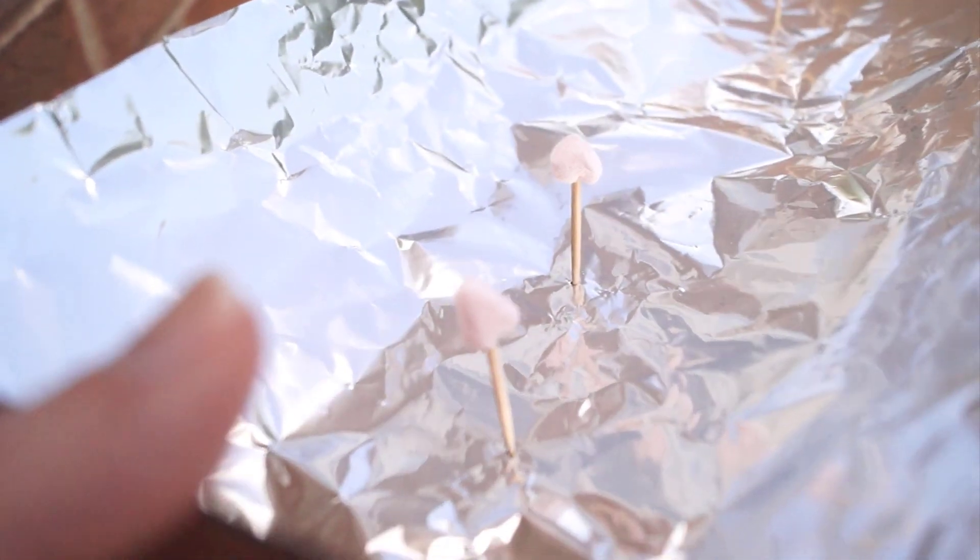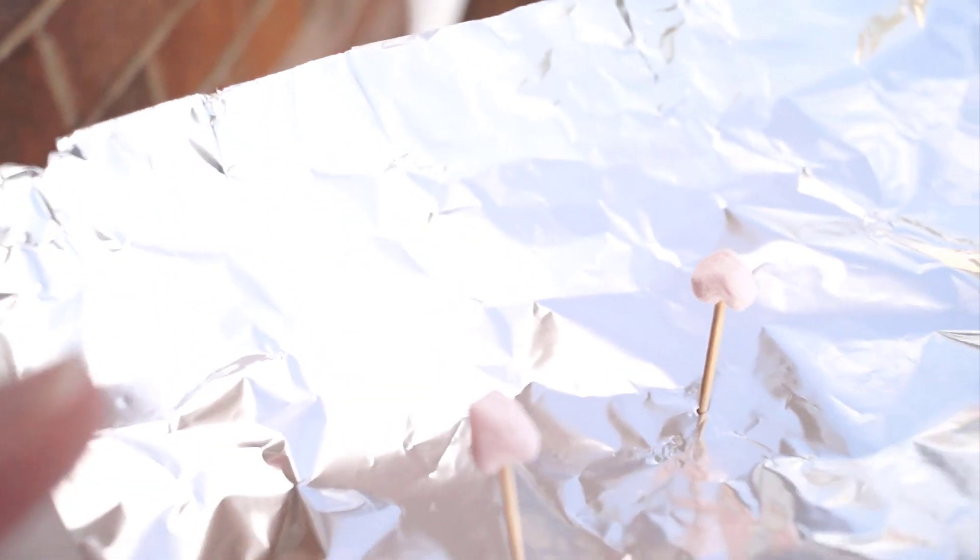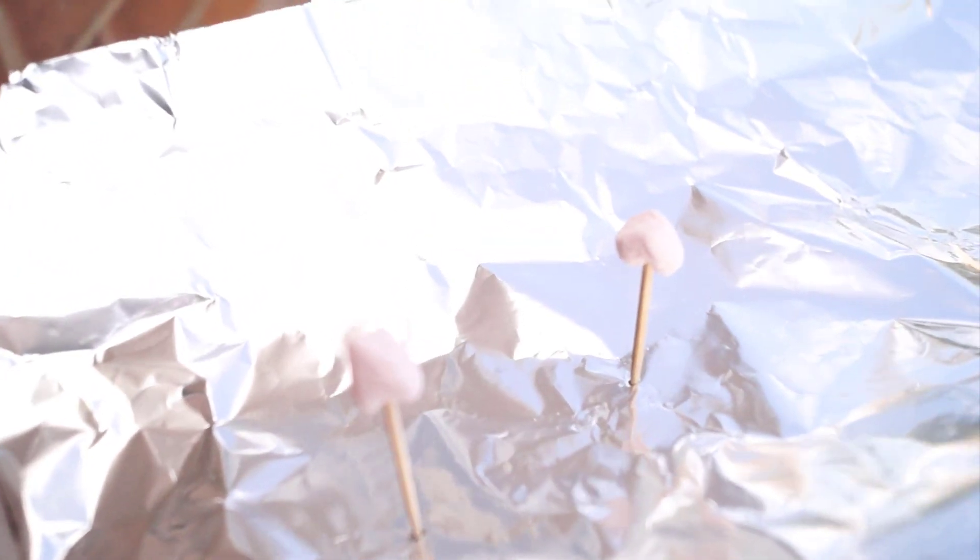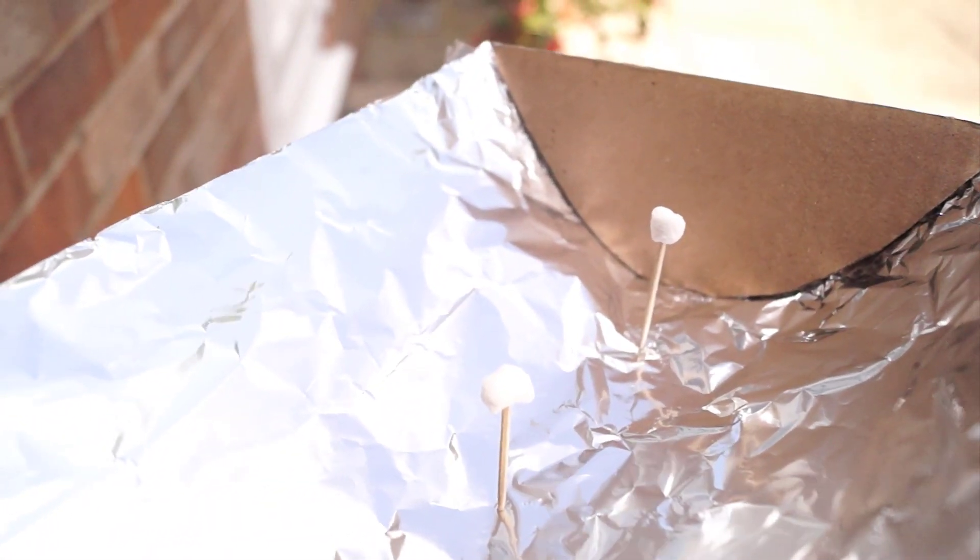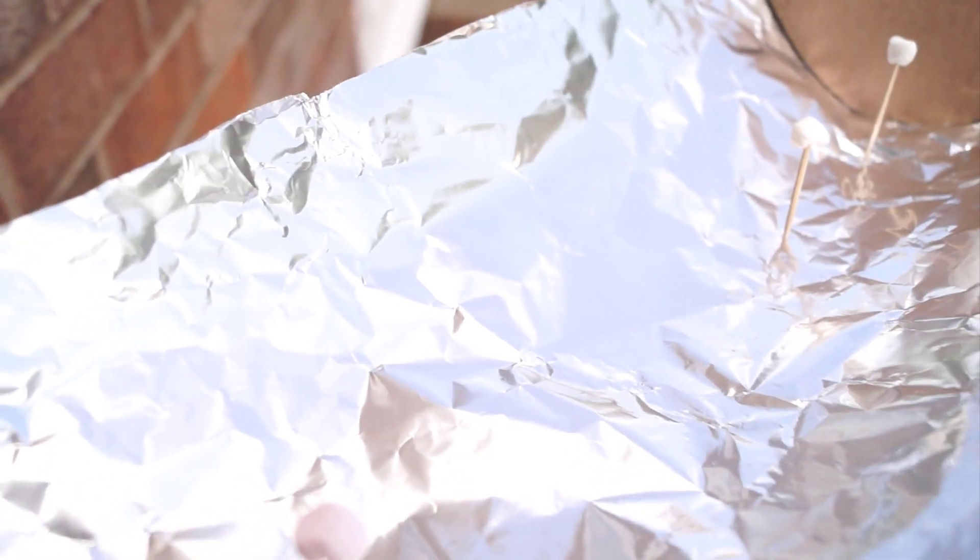As you can hopefully see I've got little cocktail sticks with marshmallows on the end. I couldn't get big marshmallows, I've only got mini ones. But these are at the height of my focus points so I've got four of them along the way of my solar oven.